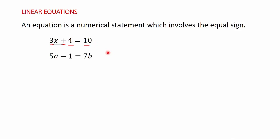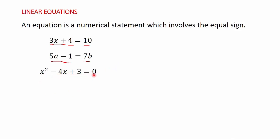Let's consider another example of an equation: 5a minus 1 is equal to 7b. We have the expression 5a minus 1 on the left hand side, and 7b on the right hand side, linked by the equal to sign. So the whole expression 5a minus 1 is equal to 7b is called an equation because we have the equal to sign in this statement.